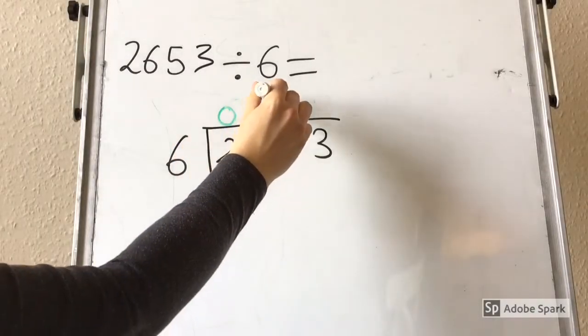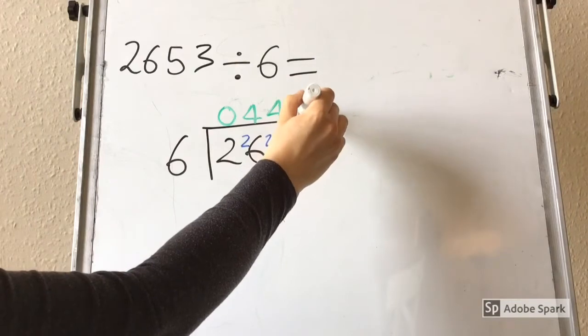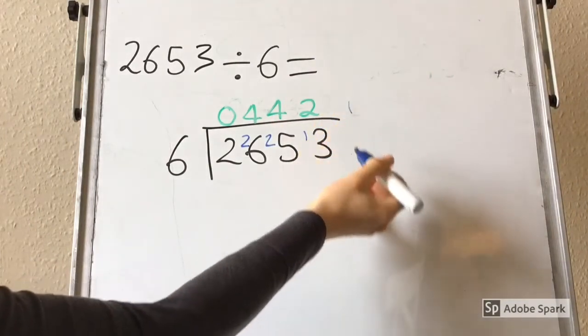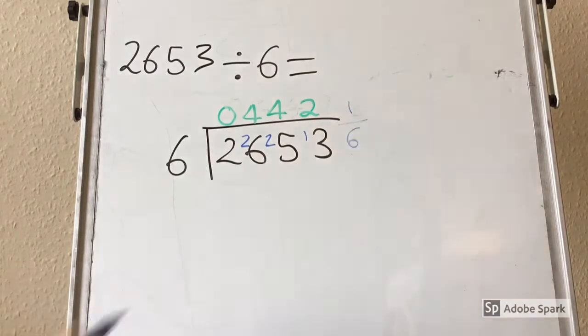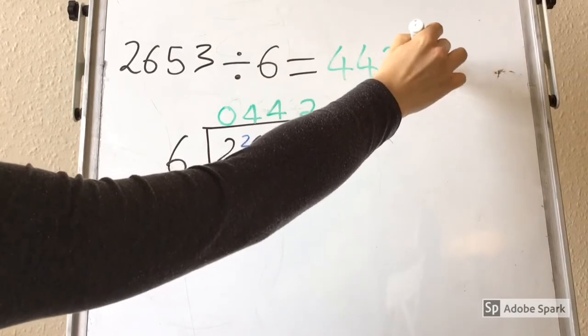Unfortunately, when we are doing short division, our divisor doesn't always perfectly fit into our dividend, so we are left with a remainder. 6 doesn't fit perfectly into 13. It goes into 12 twice with 1 left over. We want to express our remainders as fractions of our divisor, so 1 over 6. Our answer is therefore 442 and 1 sixth.